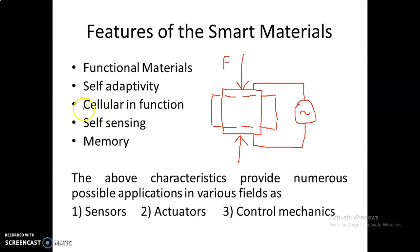Next, cellular in function. Smart materials have the capability to survive even if broken into pieces. For example, if you separate a cell from a human and provide an environment to it, it will survive. Similarly, smart materials exhibit cellular function. They also have the capability to self-sense — they are highly sensible in nature. Some materials also have the capability to memorize their shape with respect to physical properties. With these characteristics, smart materials may provide numerous possible applications in various fields as sensors, actuators, and control mechanisms.